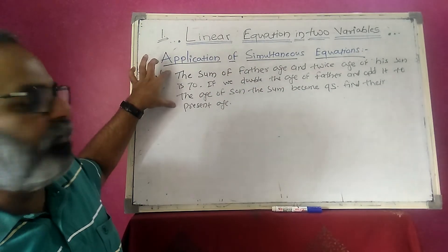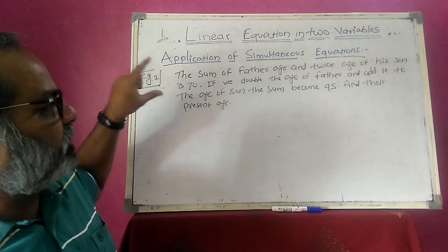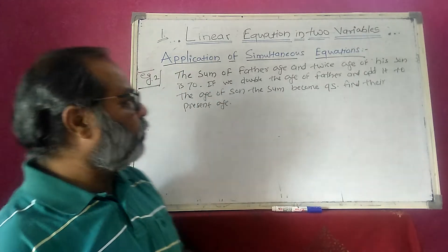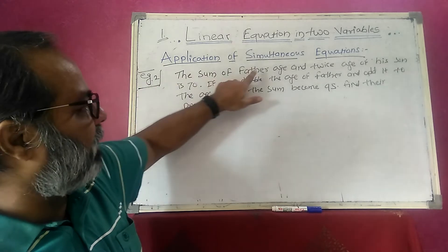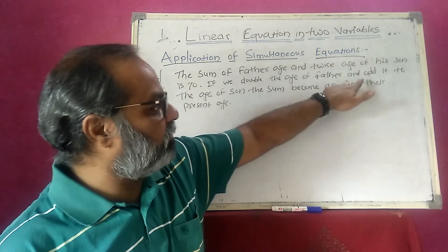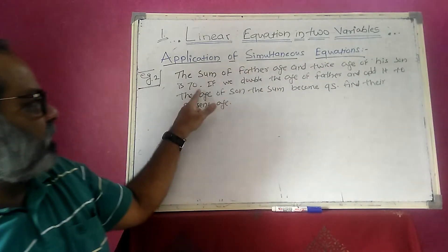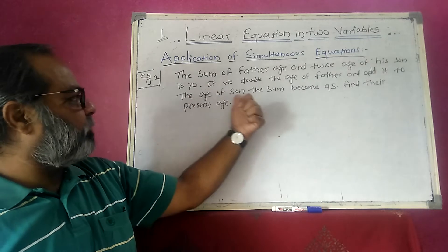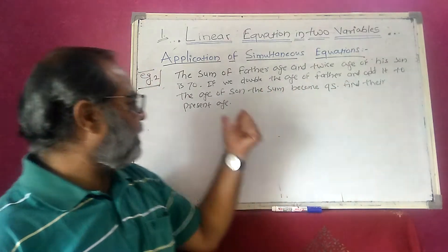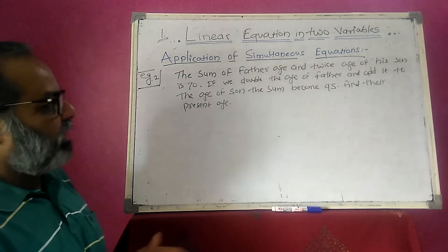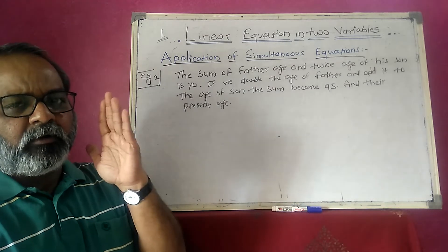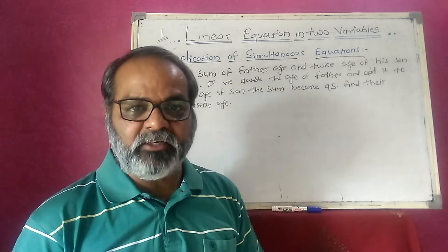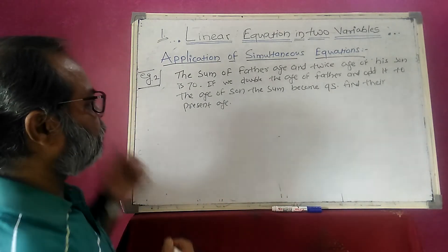Now I will write a word problem. We read it and convert it into algebraic form. The problem: the sum of a father's age and twice the age of his son is 70. If we double the age of the father and add the age of the son, the sum becomes 95. Find their present ages. I will break the problem into parts and form two equations.